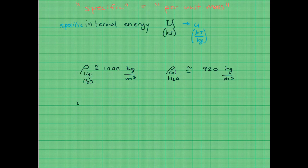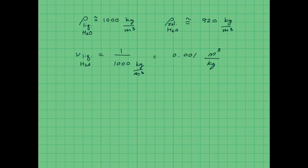And so if I want to determine the specific volume of liquid water, then all I have to do is divide by the density. So 1 over 1,000 kilograms per meter cubed. So this gives me 0.001, and the units get flipped, so I have meters cubed per kilogram. And I can compare that with the specific volume of solid water, or ice. So I have 1 over 920 kilograms per meter cubed. So that gives me 0.0011 meters cubed per kilogram.